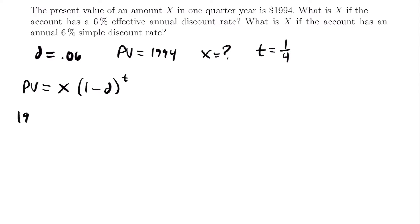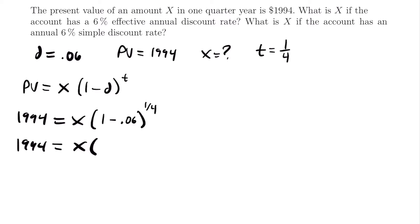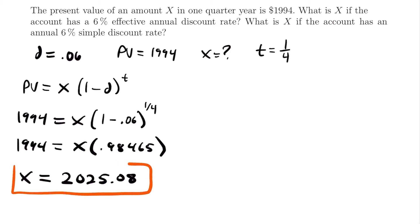If we plug in all those values, we have 1,994 is equal to X times (1 minus 0.06) to the one fourth power. If we evaluate that quantity, 1 minus 0.06 to the one fourth power, we get approximately 0.98465. So 1,994 is equal to X times 0.98465. Dividing both sides by that amount isolates X, and we find that X is equal to $2,025.08. That is the value of X with an effective annual discount rate.